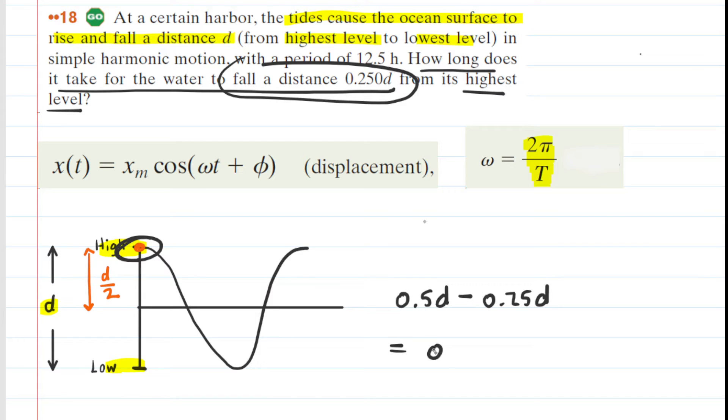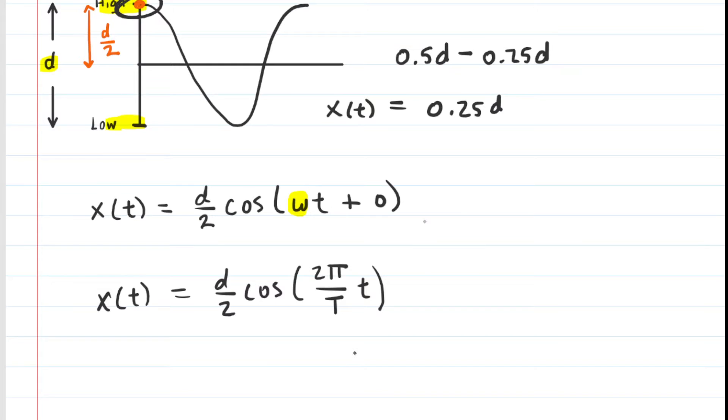We would get, of course, a value of 0.25d. So that is going to be the position of the water in this problem. That's going to be the x of t. So we're going to go to our equation and we're going to sub in the 0.25d for that position. We're going to actually rewrite the d divided by 2 as 0.5d as well.